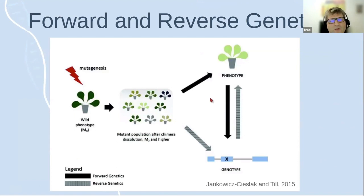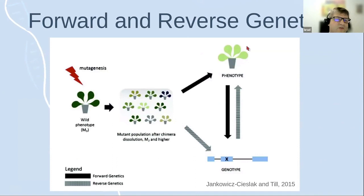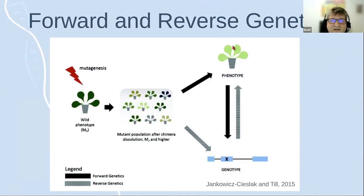Most mutation breeding is what I would call forward genetics. In forward genetics — traditional genetics — you have a mutant population, put those in the greenhouse or the field, and look for a phenotype. Oftentimes they're just released directly, sometimes with back-crossing or introgression pyramiding. You can take pains to look at the interesting plants and find out what happened at the DNA level, though that's often not done.